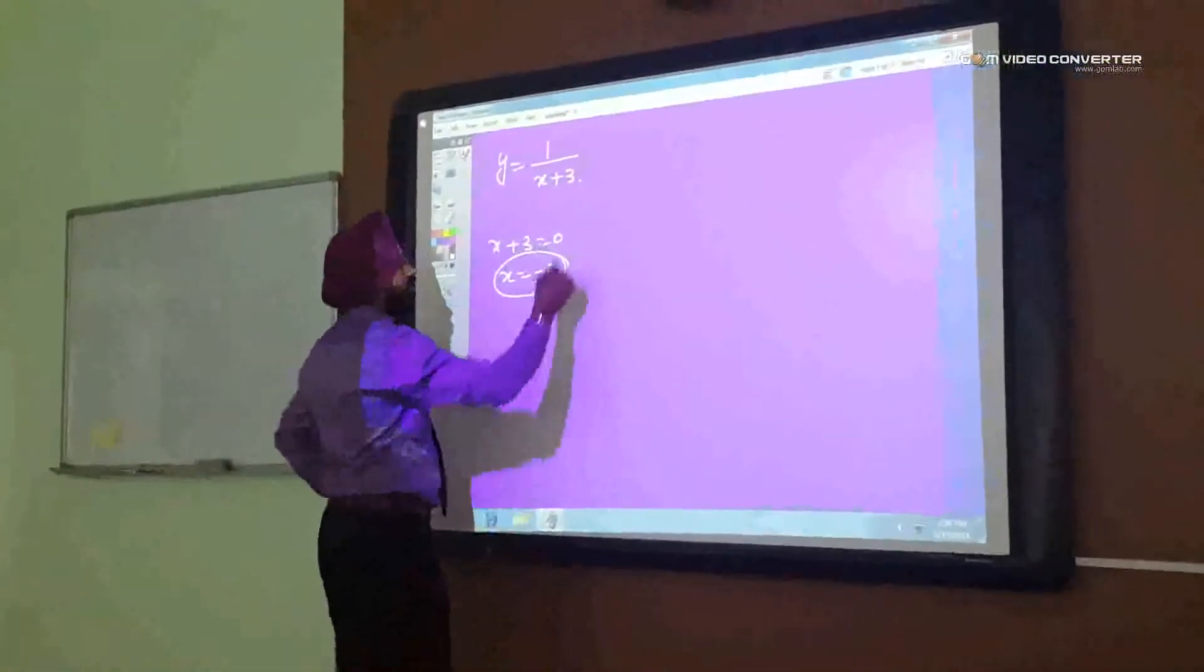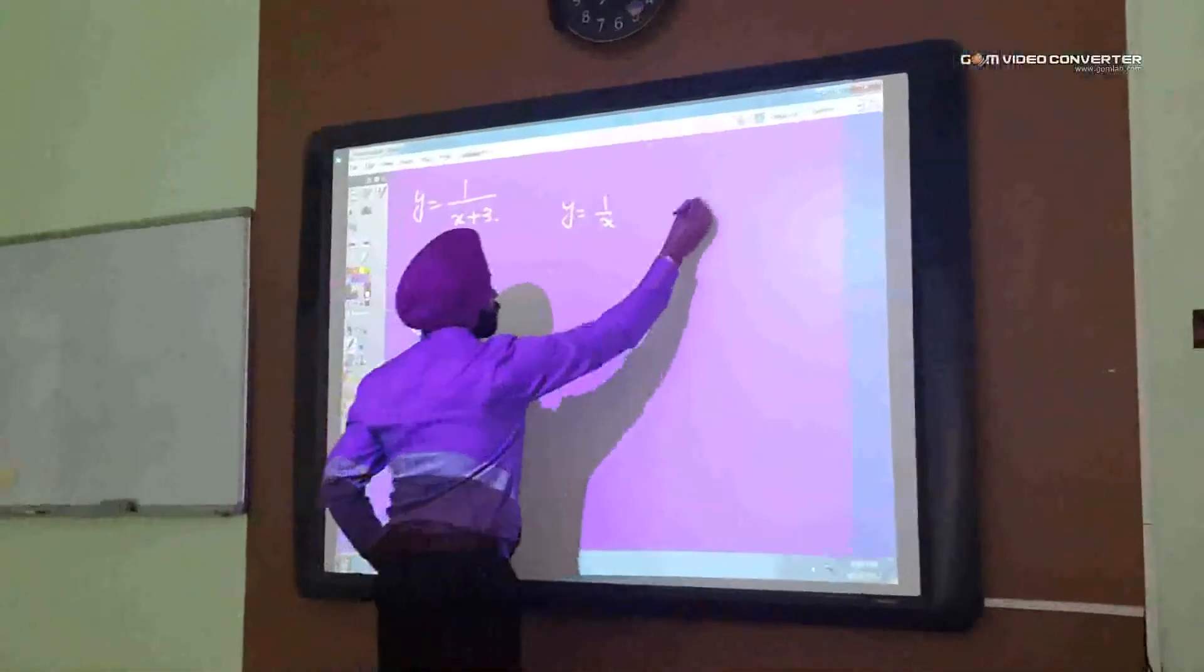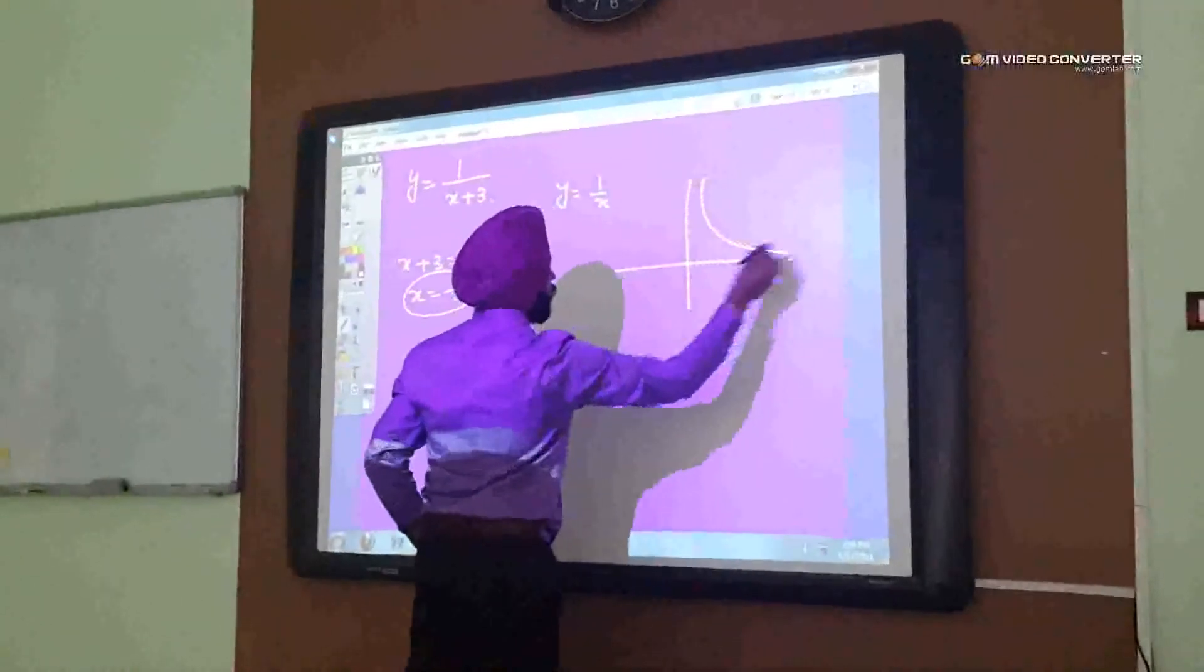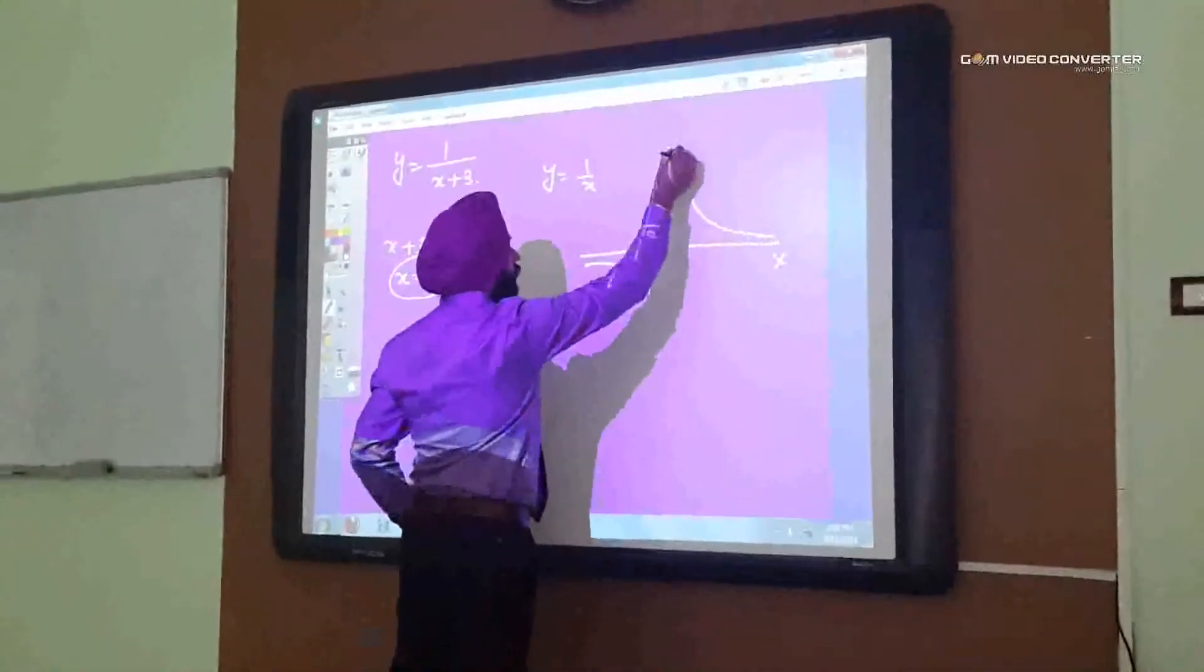What do you call it, which asymptote horizontal or vertical? x equals to minus 3 so it is vertical asymptote. Okay, so for y is equals to 1 by x the curve is simple this and this 0 x and y.